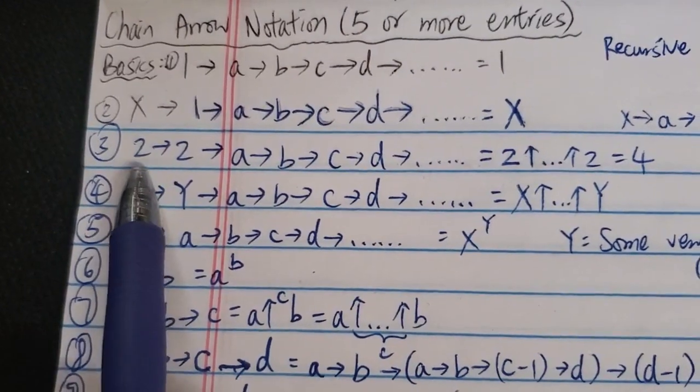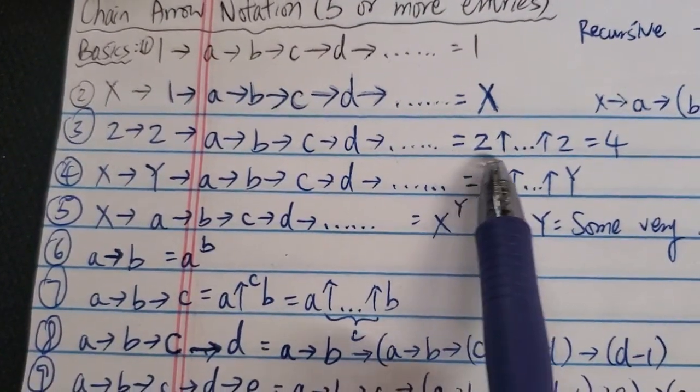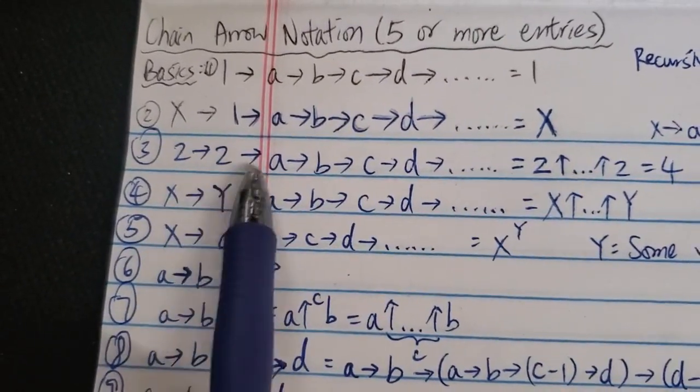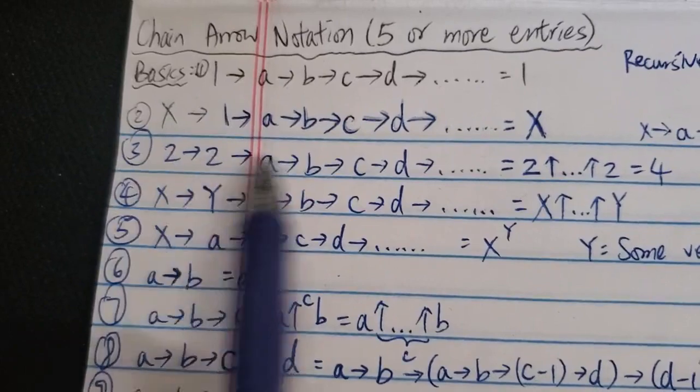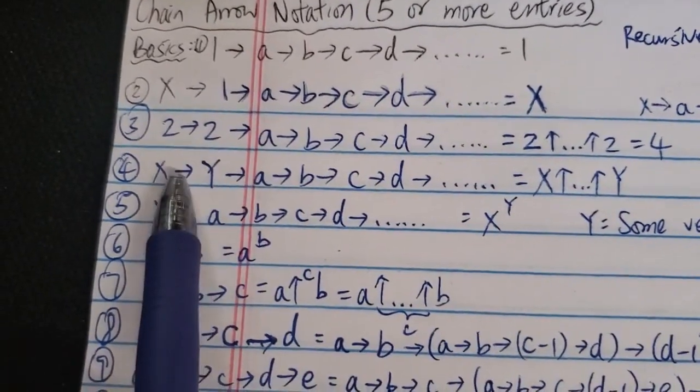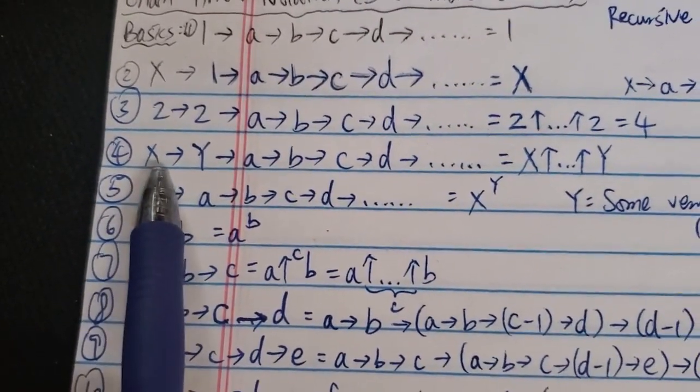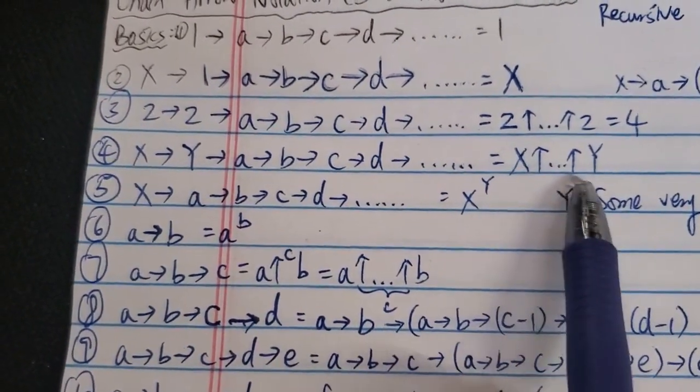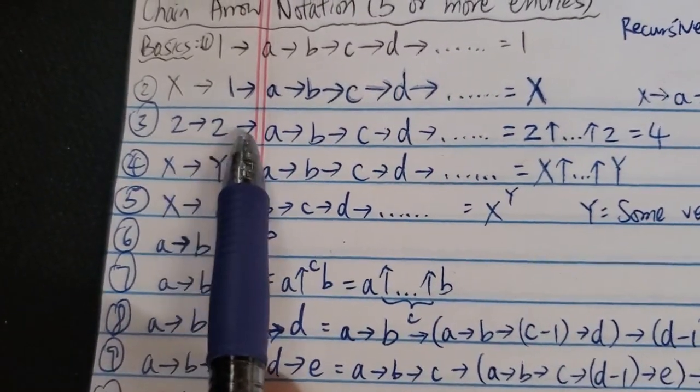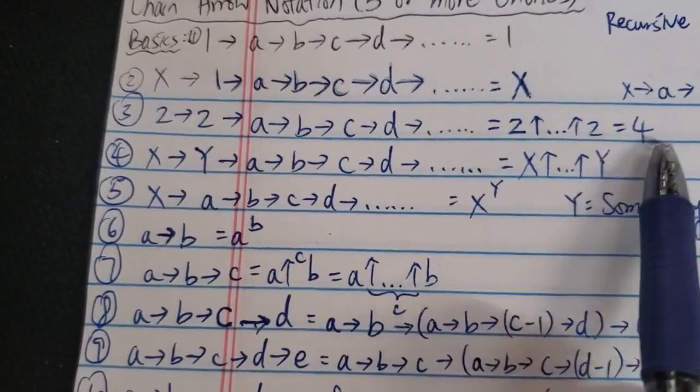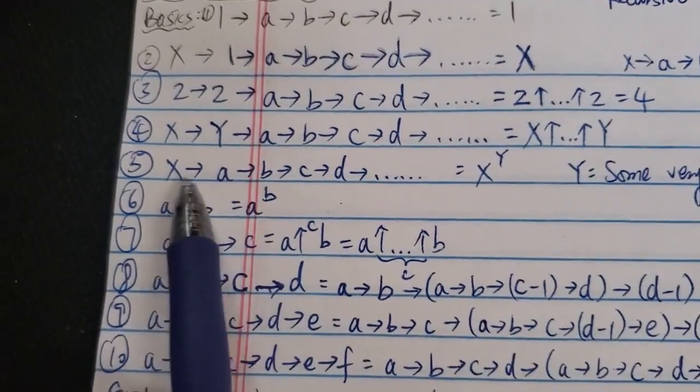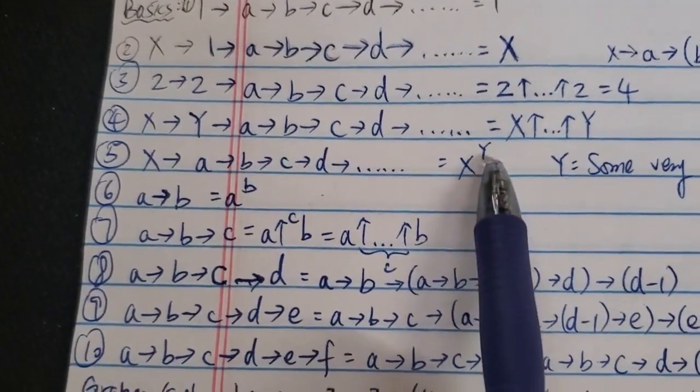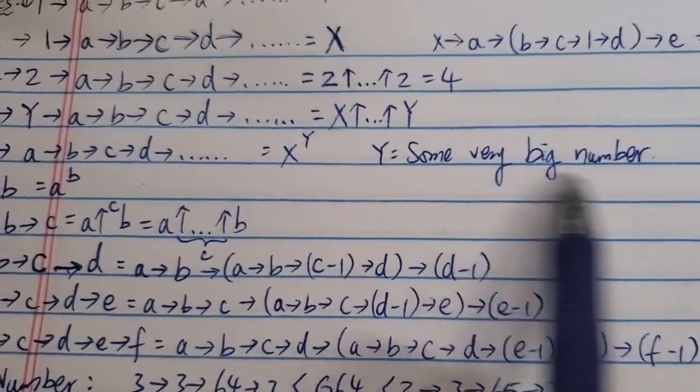And then the third rule: 2→2→... is just equal to 2 some arrows 2. So it doesn't matter how many entries behind the first two twos, it's just equal to 4. You'll see in a second. Rule four is X→Y→A→... It just equals to X some arrows Y. Therefore, you can see 2→2→... just equals to 4.